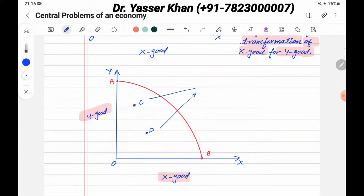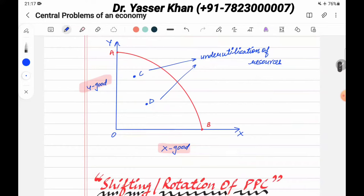This shows us under utilization of resources. I write here under utilization of resources. It means that resources have not been used properly. Why not? I will tell you a little bit.